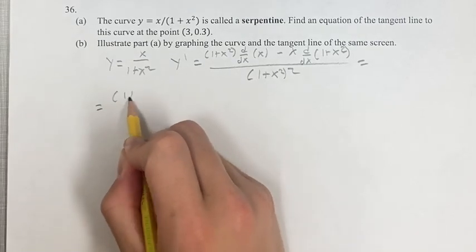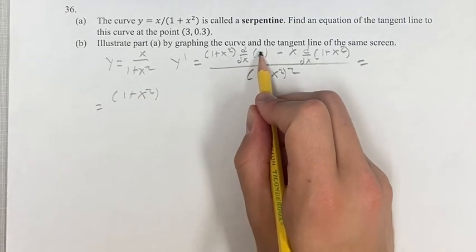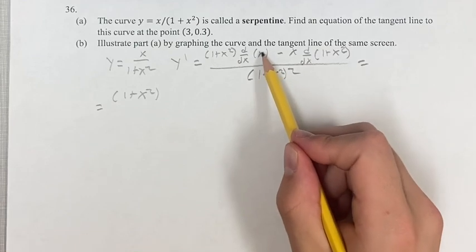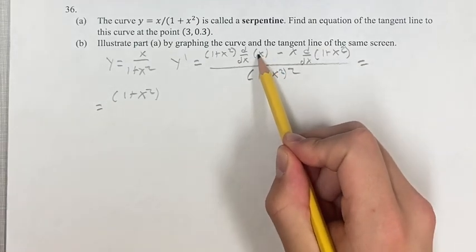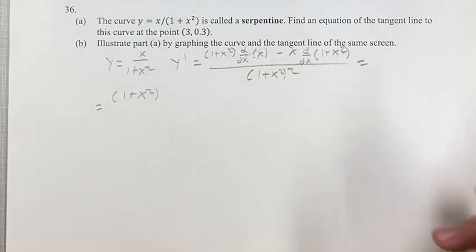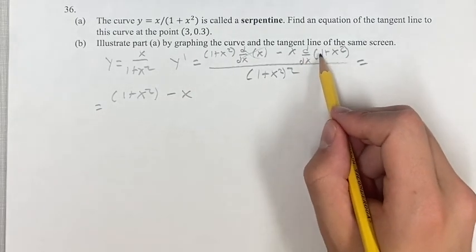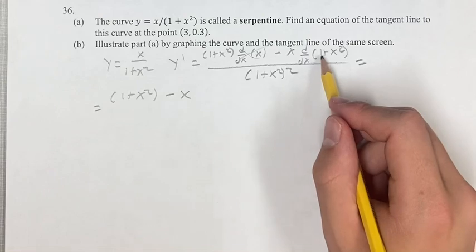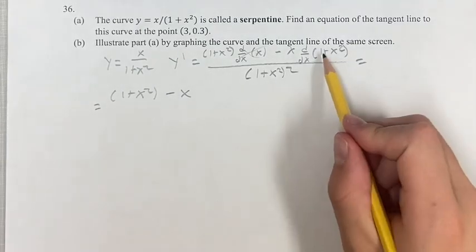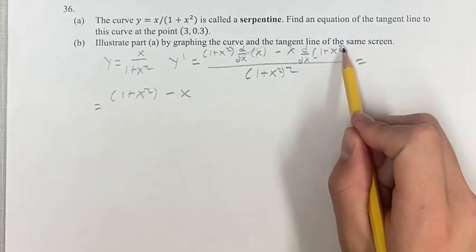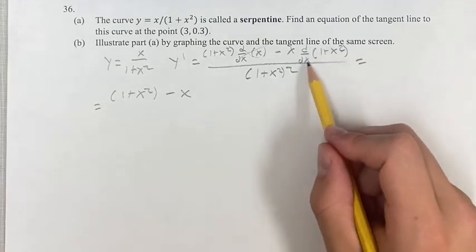Simplifying this, we get 1 plus x squared times the derivative of x. x is a linear term, so its derivative is its coefficient, which is 1. Minus x, then the derivative of 1 is 0, because it's a constant. So the derivative of x squared is just the derivative of x squared.